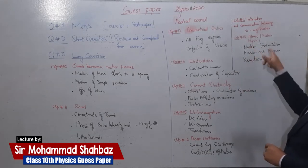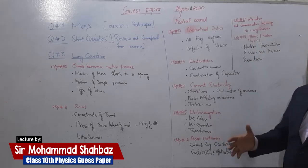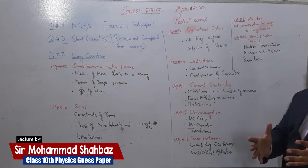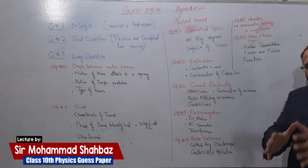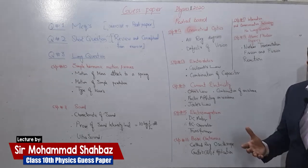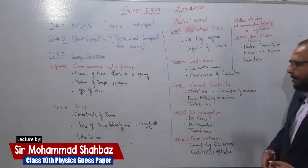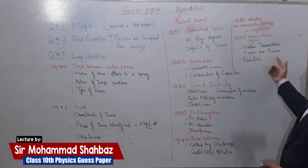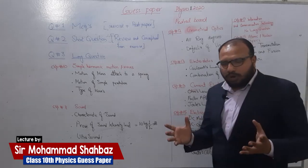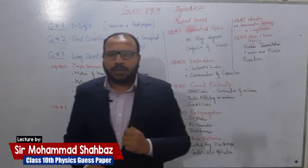For Chapter 18: Atomic and Nuclear Physics, nuclear transmutation is the first important long question. Carbon dating and half-life are essentially short questions — if there is a long question, you can attempt it efficiently. Fission and fusion reactions are also important. This is the overall review of Class 10 Physics for the Federal Board.